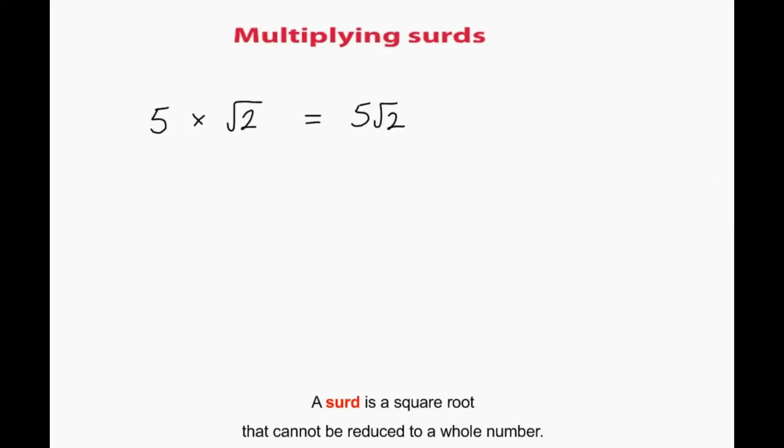5 by root 2 is 5 root 2. An important result: root 2 by root 2 is 2.